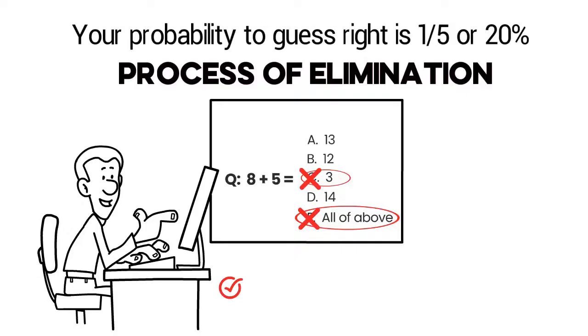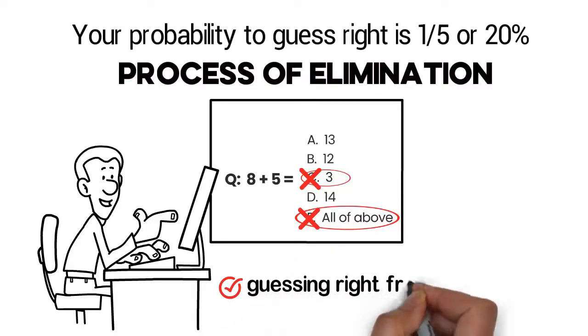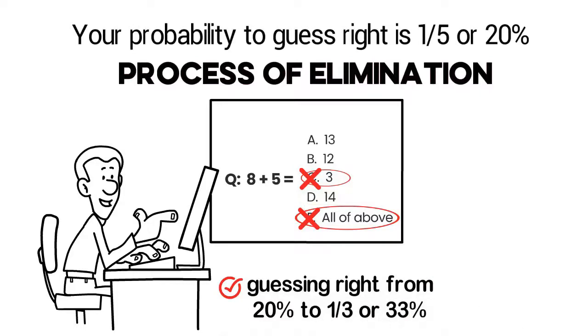By doing this, you just boosted the probability of guessing right from 20% to 1 out of 3 or 33%, all from the power of the process of elimination.